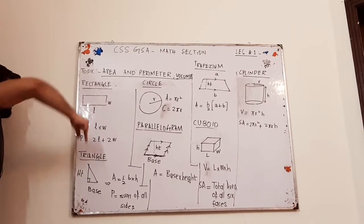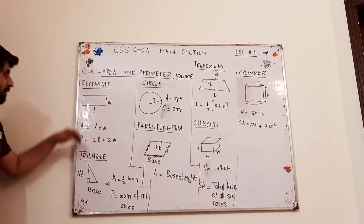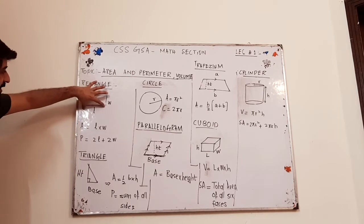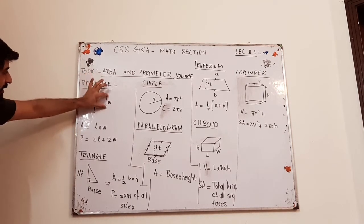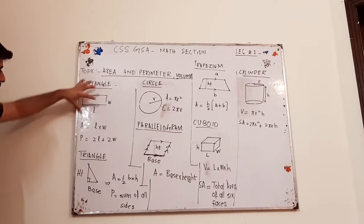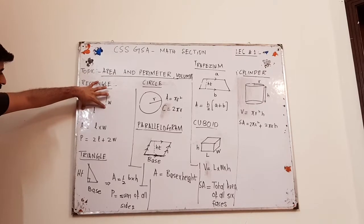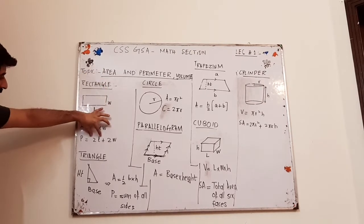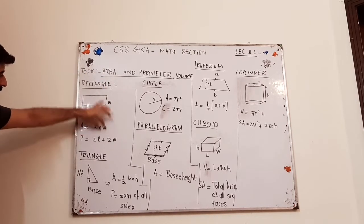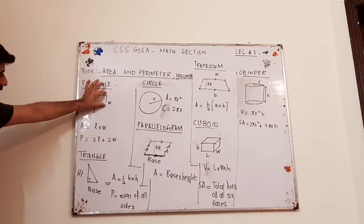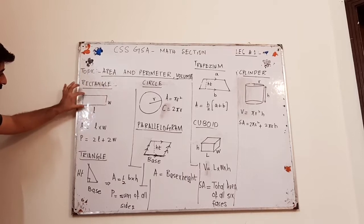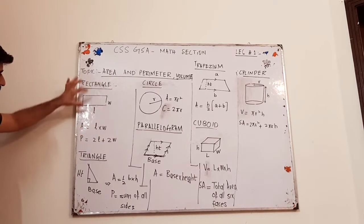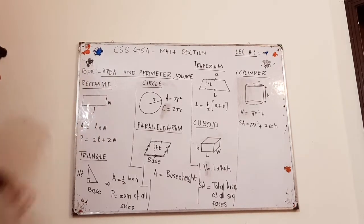As far as perimeter is concerned, perimeter is basically adding all the boundary lengths — two times length plus two times width will give you the perimeter of a rectangle.